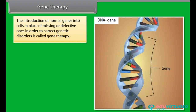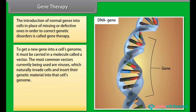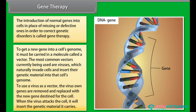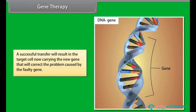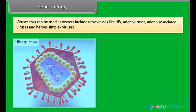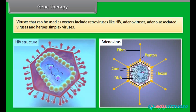Gene therapy. The introduction of normal genes into cells in place of missing or defective ones in order to correct genetic disorders is called gene therapy. To get a new gene into a cell's genome, it must be carried in a molecule called a vector. The most common vectors currently used are viruses, which naturally invade cells and insert their genetic material into the cell's genome. The virus's own genes are removed and replaced with the new gene. When the virus attacks the cell, it inserts the genetic material it carries, resulting in the target cell carrying the new gene to correct the problem. Viruses that can be used as vectors include retroviruses like HIV, adenoviruses, adeno-associated viruses, and herpes simplex viruses.